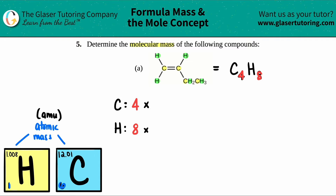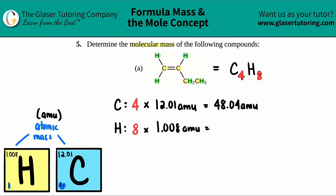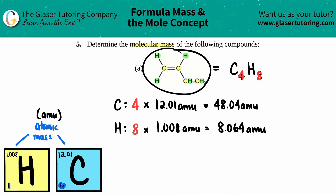The average mass of hydrogen is 1.008 amu and the average mass of carbon is 12.01 amu. So for carbon: 12.01 amu multiplied by 4, and for hydrogen: 1.008 amu multiplied by 8. That gives us 4 × 12.01 = 48.04 amu for carbon, and 8 × 1.008 = 8.064 amu for hydrogen.